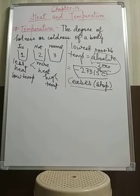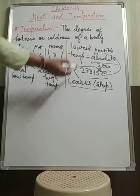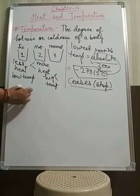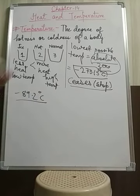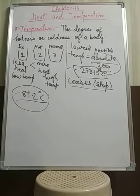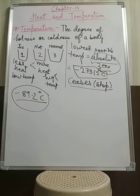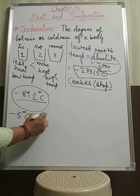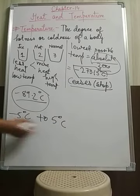Absolute zero is minus 273.15 degrees Celsius, and on Earth the lowest possible temperature recorded is minus 89.2 degrees Celsius in Antarctica. The hottest place on Earth is Death Valley in California, and its temperature is 56.7 degrees Celsius. The temperature of an ice cream varies between minus 5 degrees to 5 degrees Celsius.